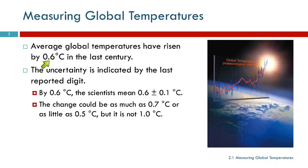When a scientist reports a number like this, we do it in a very particular way that indicates something about how that was measured and how confident we are in that measurement. So any measurement is going to have some uncertainty. You can't measure how long something is and say it's exactly 12 inches — that's just not possible. So all measurements have uncertainty. When we say 0.6 degrees, we imply that there's uncertainty in the last written digit.